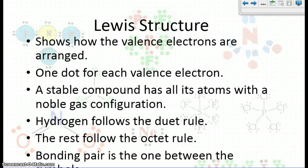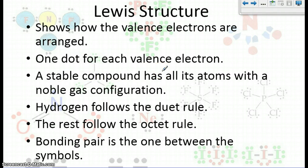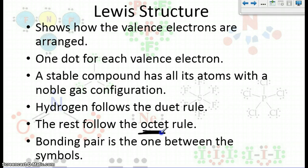First, a little about what a Lewis dot structure is. It shows the valence electrons, which are the outside shell of electrons, and how they're arranged. We're going to put one dot for each valence electron, and a stable compound is going to have all of the atoms in the compound having a noble gas configuration, meaning that it has eight valence electrons. So we're going to follow the octet rule for the majority of the elements.